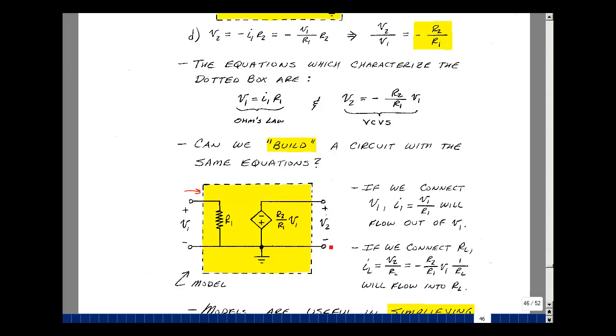If you put a resistor here for a load RL, a current is going to flow in this direction, and the value is going to be minus R2 over R1 times V1 for the voltage, and then divide by the resistance and get the current IL. Both the original circuit and this model have the same equations, so they're equivalent.